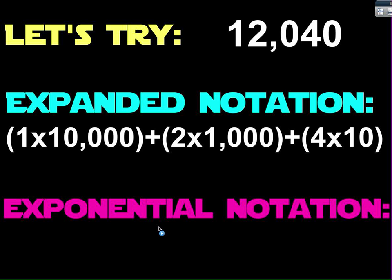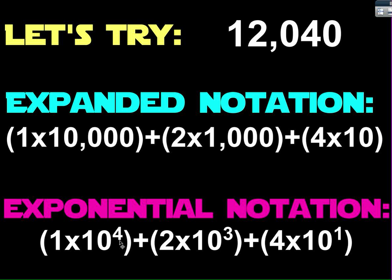Exponential notation does the exact same thing, except instead of writing all these zeros, we could write it as an exponent like we've been working on. So 1 times 10,000 would be written as 1 times 10 to the 4th power. Remember there are four zeros here, so that would be 10 to the 4th power.